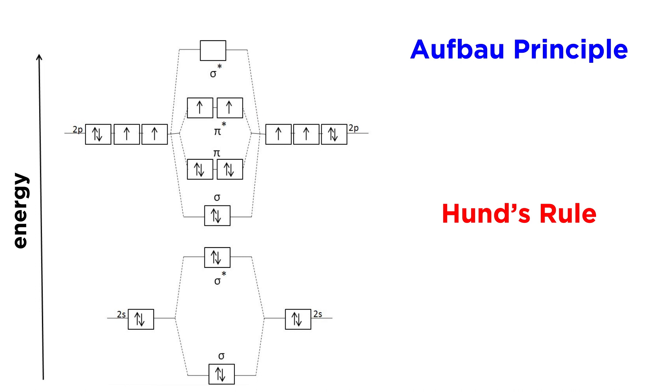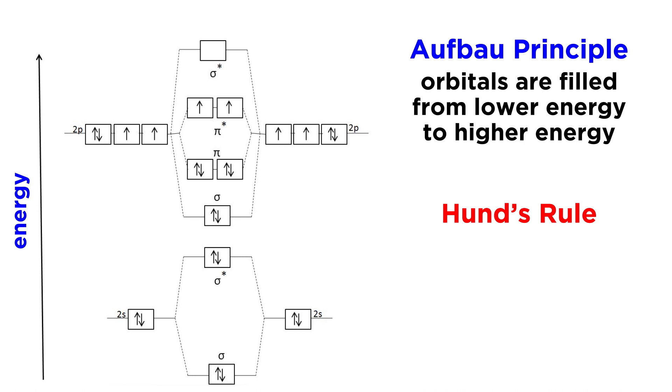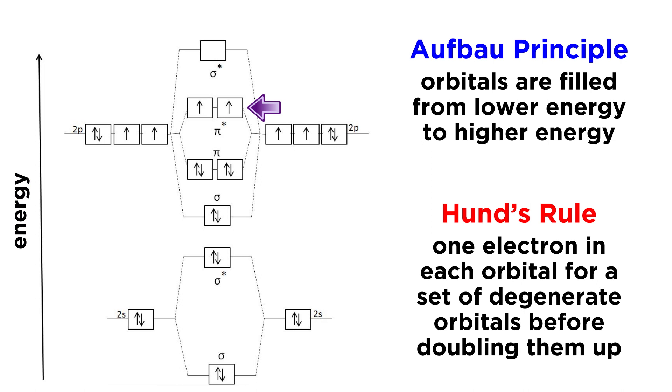The good news is that these orbitals are still filled according to the Aufbau principle and Hund's rule, like we already know. This means that we fill them from lower energy to higher, according to Aufbau, and we will put one electron in each orbital for a set of degenerate orbitals before doubling them up, according to Hund.